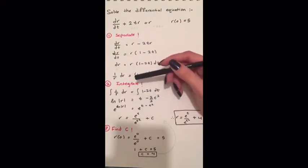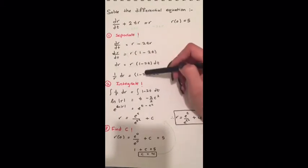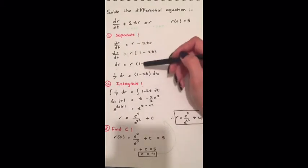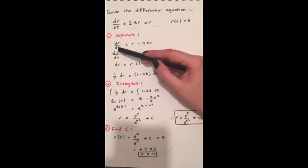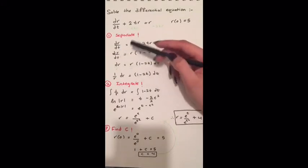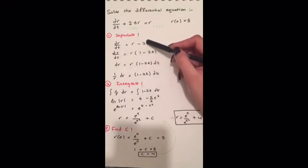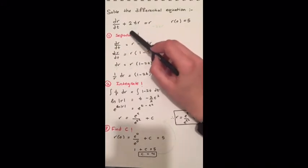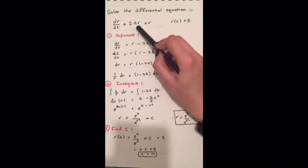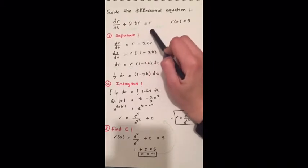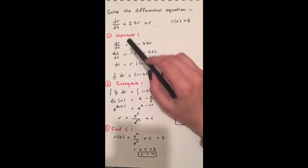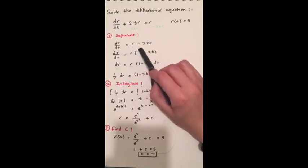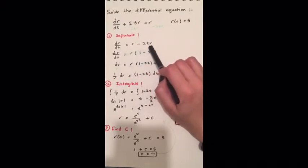The first step is that we need to separate the variables. When I say that, I mean that we need to put the r's on one side of the equation and the t's on the other side. So we will move 2tr to the other side and we will get dr/dt equals 2r minus 2tr.